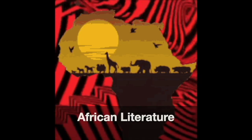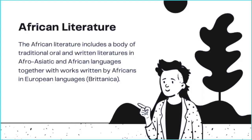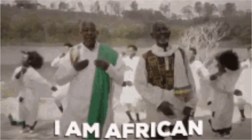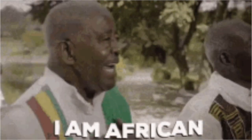Let me show you specific examples of these. African literature includes a body of traditional oral and written literatures in Afro-Asiatic and African languages, together with works written by Africans in European languages. It includes themes on slave narratives, protests against colonization, calls for independence, African pride, and hope for the future.